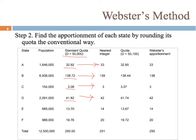When we do all that and add those numbers up — 33 plus 139 plus 3 plus 42 plus 14 plus 20 — we get 251. So we're a little high.